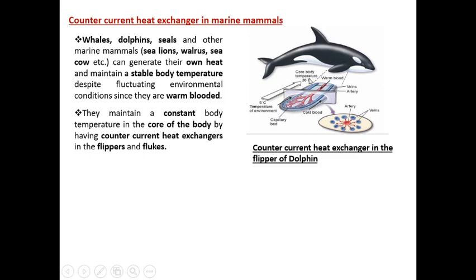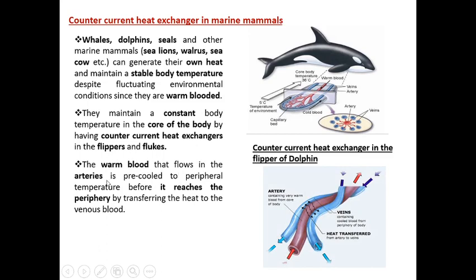Even though marine mammals live in a very cold environment, they maintain a constant core body temperature through counter current heat exchangers in their flippers and flukes. There is a critical arrangement of arteries and veins here, similar to what we saw in large aquatic fish. The warm blood flowing in the arteries is pre-cooled to peripheral temperature before it reaches the periphery by transferring heat to the venous blood.